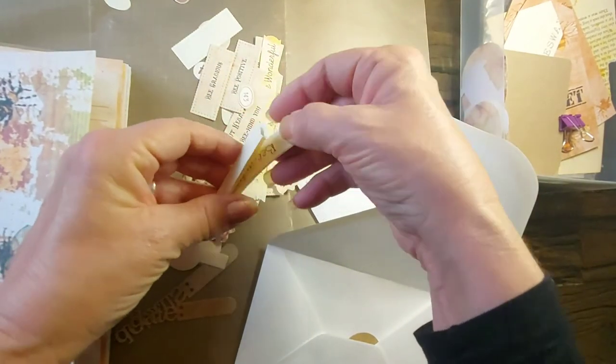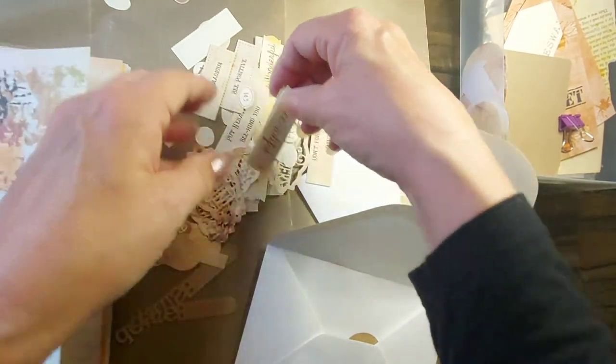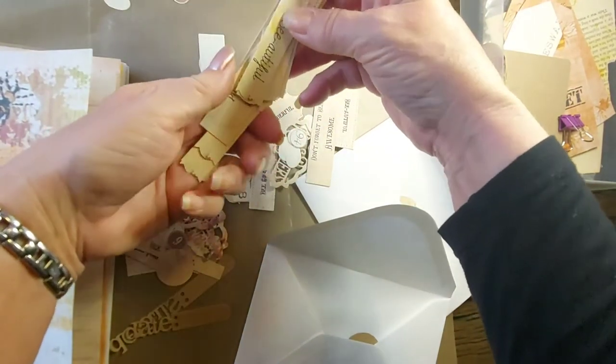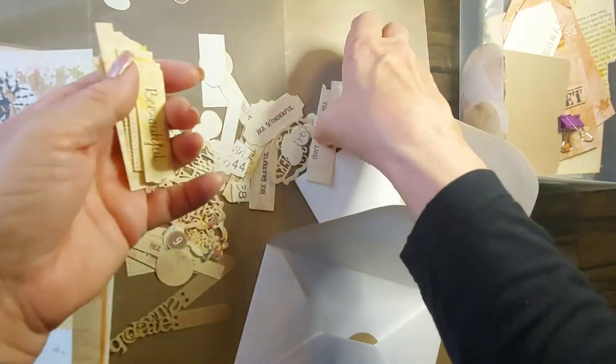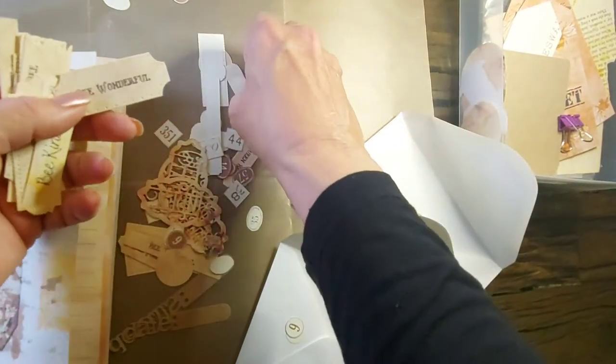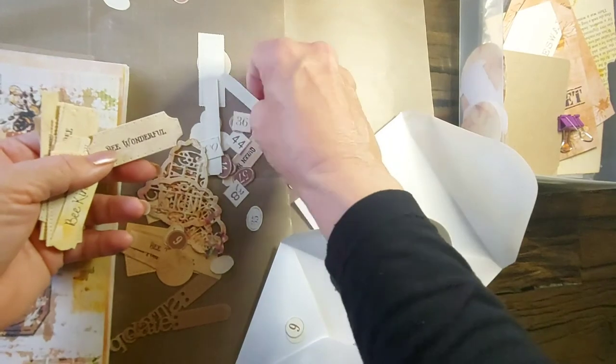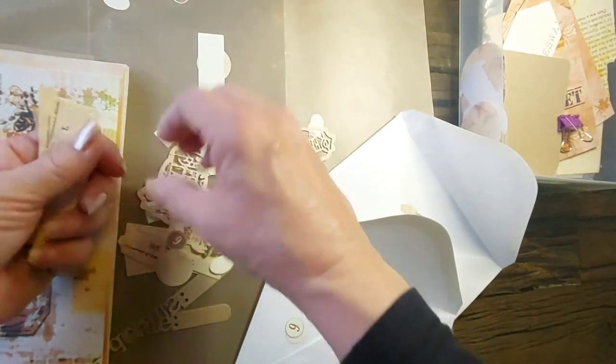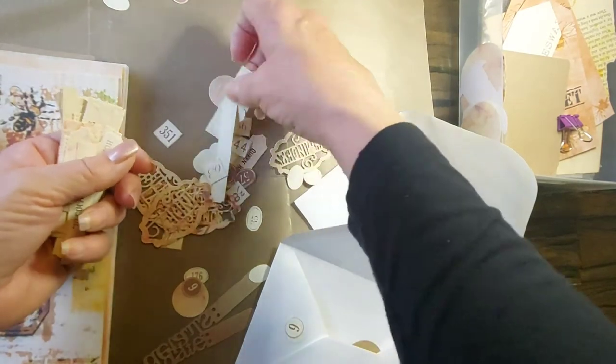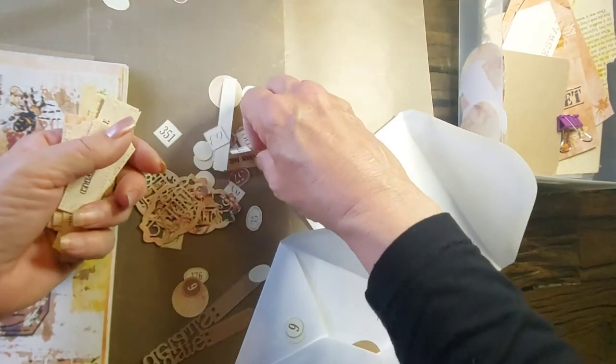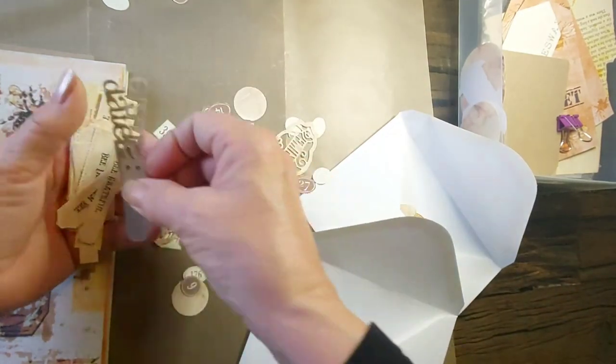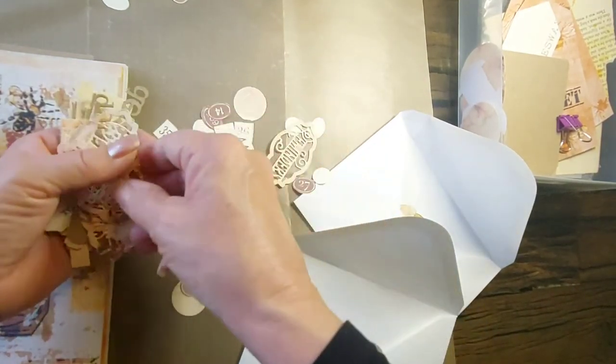One of the things I learned that sometimes when somebody gives you a negative comment, not on journaling, but just, you know, or you think of something that's bothering you. When you suffer with anxiety, it just bothers you a little bit more. One of the things I learned was to write it down, put it in an envelope and forget about it.